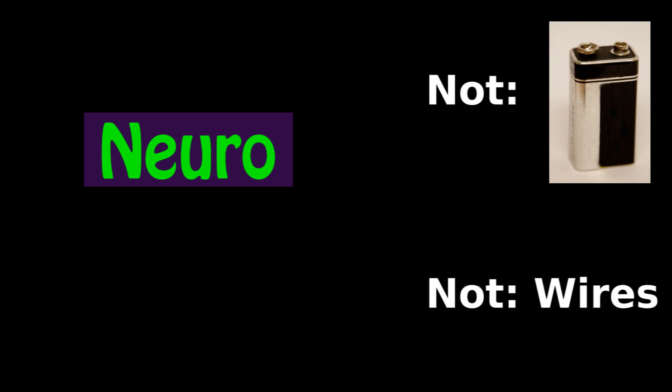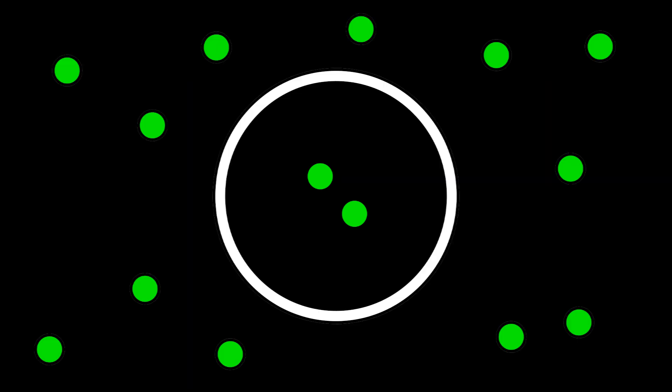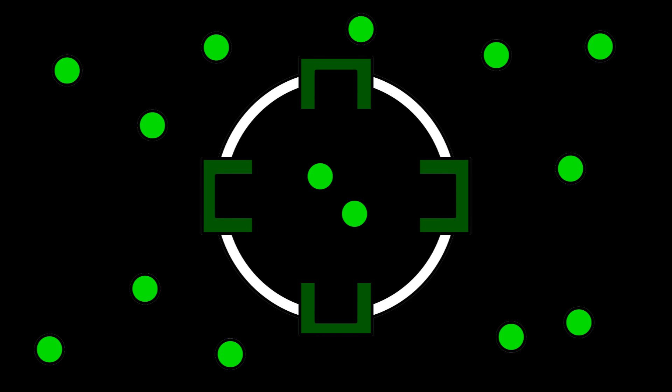This electrical concept also applies to biology. Humans aren't made of batteries and wires, but we do have charge gradients and channels. Instead of electrons, there are sodium ions, 20 inside and 600 outside. And instead of a wire, channels connect the two sides.